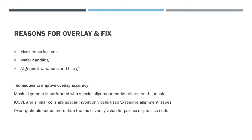We cannot completely avoid overlay or make it zero, but the value of overlay error must not exceed the specified limit. For example, a process node may specify a maximum of 10 nanometers or 2 nanometers. I hope you now have a good understanding of overlay, the reasons for it, and its fixes.